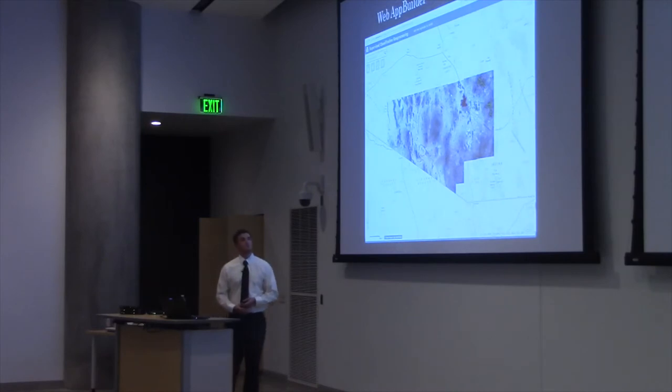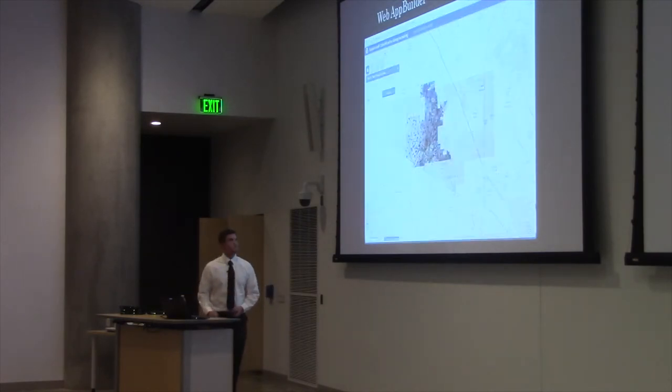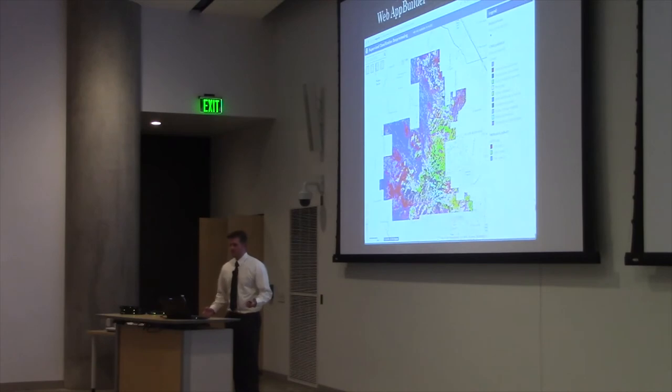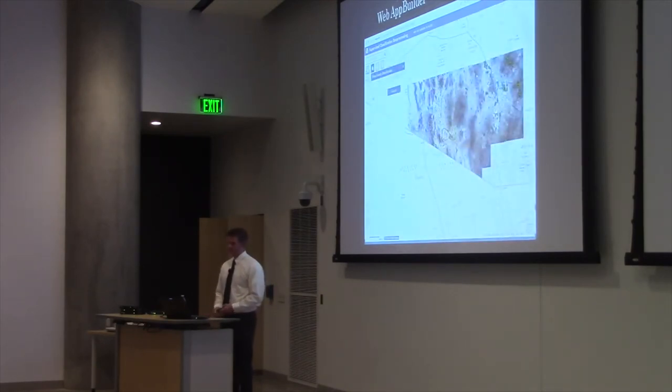This is where we start to consume these geoprocessing services in a web application. I used Web App Builder because there's no coding involved and it allows you to rapidly produce applications. First we can come up here and click this first geoprocessing toolbox. It will give you this dialog window. You can click Execute. It's going to start processing and it will probably take about a minute or so. It will give you the results and your legend.